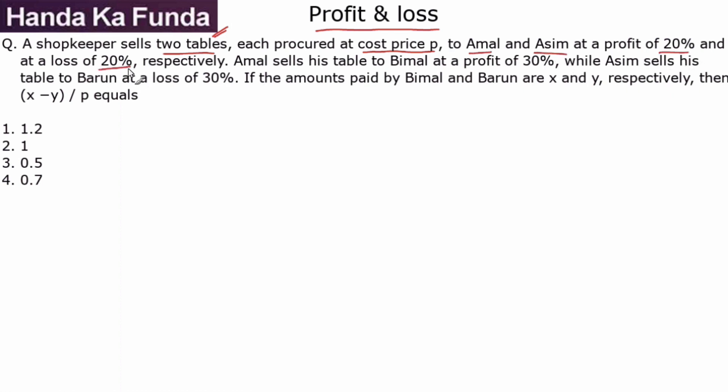So let's say the cost was p. It was sold to two people: one was Amal and the other was Asim. When sold to Amal, it was sold at a 20% profit.